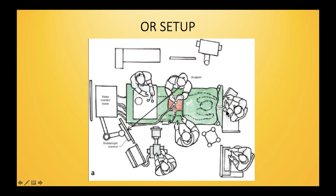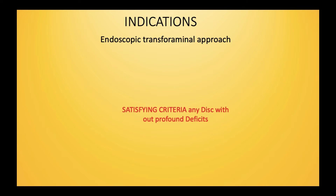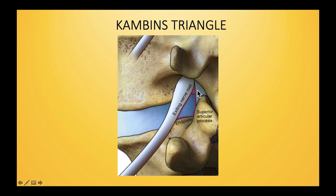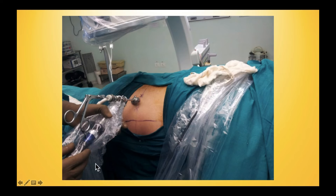Whether the procedure is done under local, regional, or general anesthesia, the anesthetist must always be present — that is the most important consideration. The transforaminal endoscopic approach uses a scope that goes through the transforaminal region with pen-sized instruments, passing between the superior articular process and the exiting nerve root through Kambin's triangle, via a half-centimeter incision placed 12 to 16 centimeters from the midline.